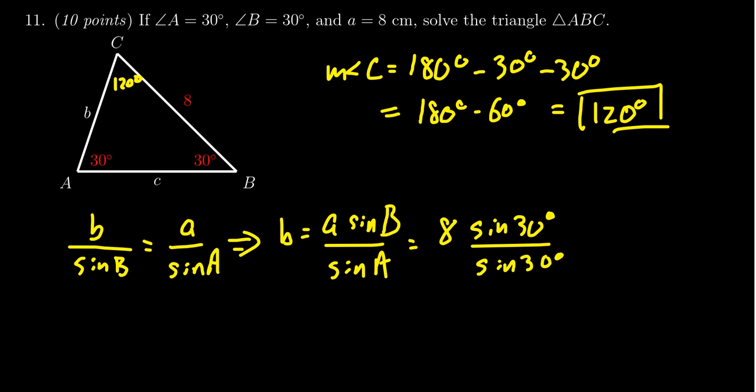Sine of 30 degrees is one half; we don't even need a calculator for that. But since it's both the same, those are going to cancel out, and we get 8 right here. So b is 8, 8 centimeters for little b.